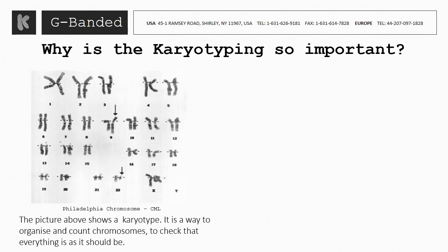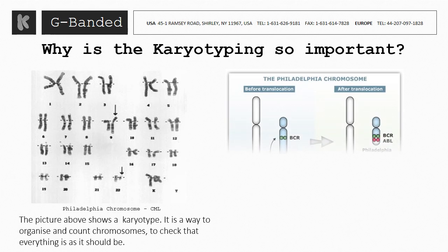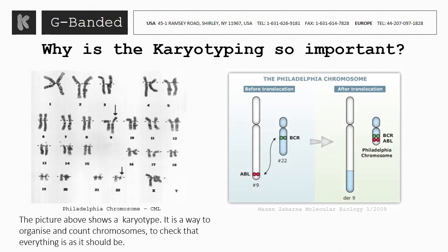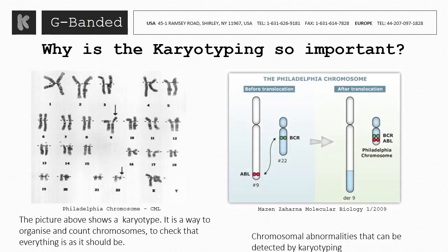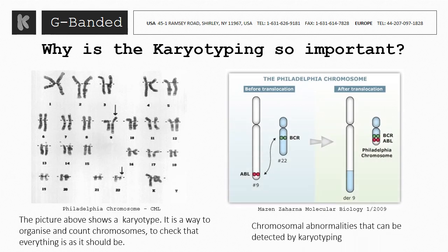A karyotype can easily reveal chromosomal abnormalities, such as missing a chromosome, having an extra chromosome, or having a deletion of part of a chromosome.